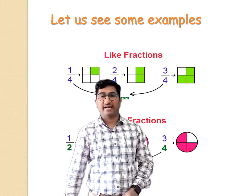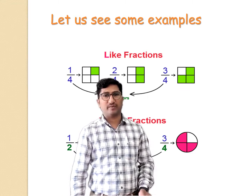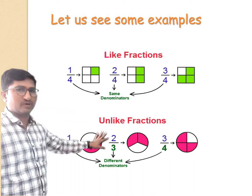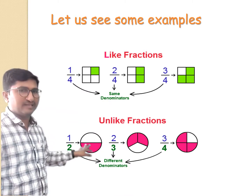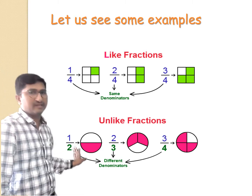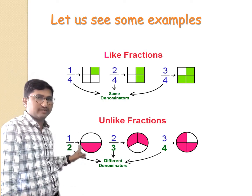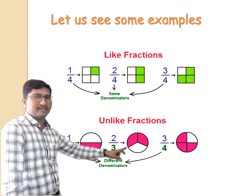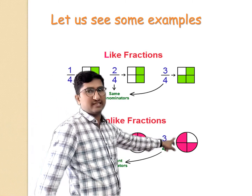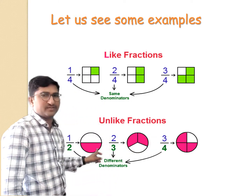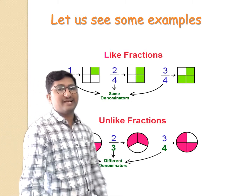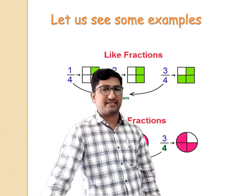But what about unlike fractions? Unlike fractions means those fractions that have different denominators. We are unable to compare them easily. For example, 1 upon 2, 2 upon 3, and 1 upon 4 — these are all examples of unlike fractions. So let us see how we will compare fractions with the same denominators, meaning like fractions.